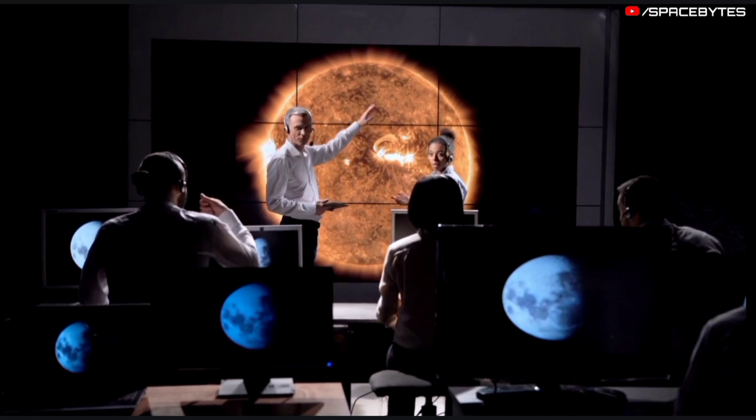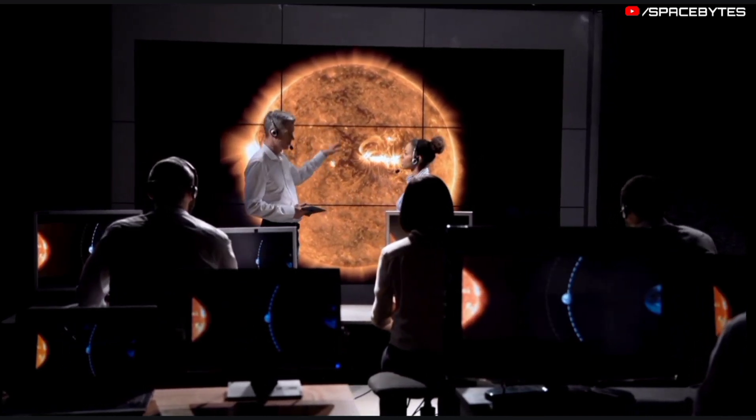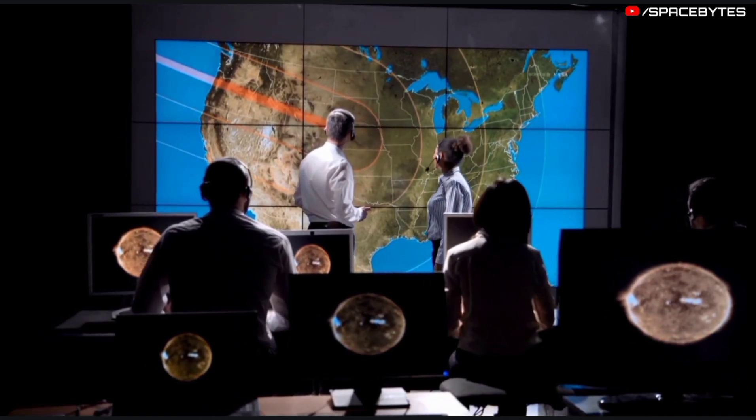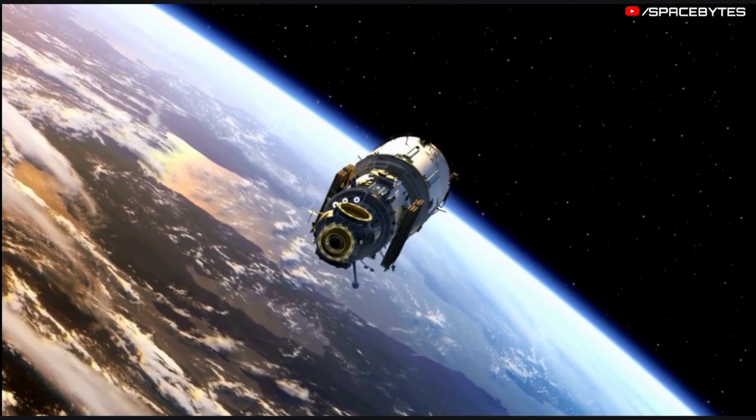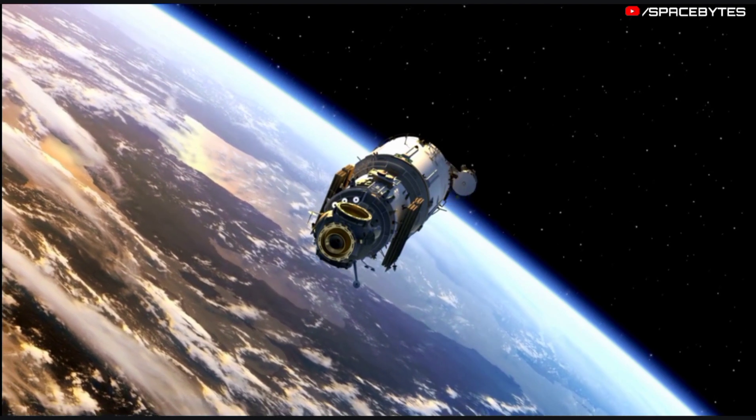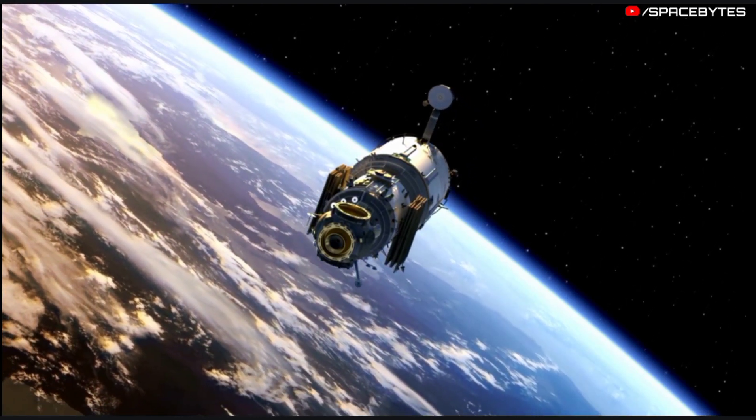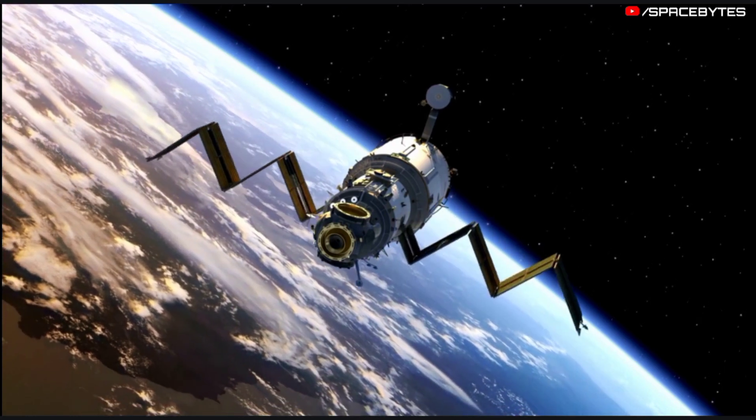NASA also has a new impact monitoring system in place which uses an algorithm called SentryLL to calculate the impact risk of near-Earth objects. NASA can track the orbital path of the asteroid using this infrared data and can even predict its orbit years into the future.